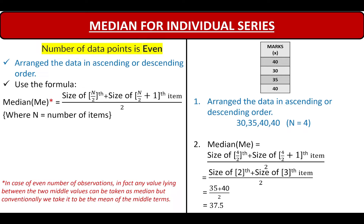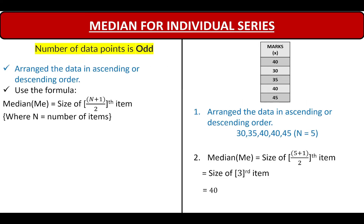Always remember that in case of an even number of observations, any value lying between the two middle values can be taken as median, but conventionally we take it to be the mean of the middle terms. For the odd data points example, after arranging in ascending order we get: 30, 35, 40, 40, 45. Here N equals 5, so the median is the size of the (5+1)/2 th item, that is the 3rd item. The 3rd item is 40, so the median is 40 marks.